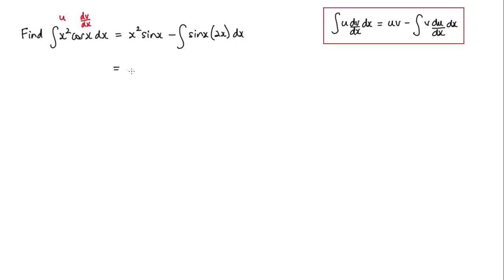I can just rearrange this a little bit, so x squared sine x minus the integral of 2x sine x with respect to x.